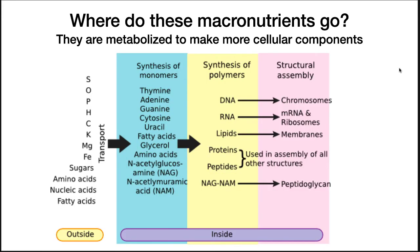Once a bacterium assembles all these nutrients, it uses them to make the necessary monomers: nucleotides, fatty acids, amino acids, NAM, NAG, which are then synthesized into biopolymers — DNA, RNA, proteins, etc. — which then make all the important structures of the cell: chromosomes, ribosomes, membranes, etc. So now we've gone all the way from what elements microbes need, to how they get them into the cell, and then where they end up.